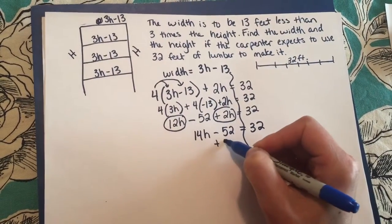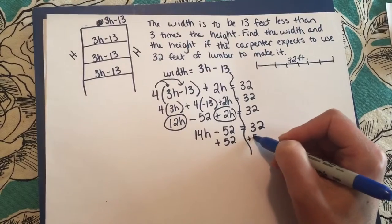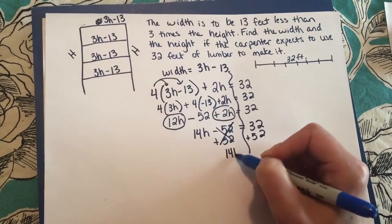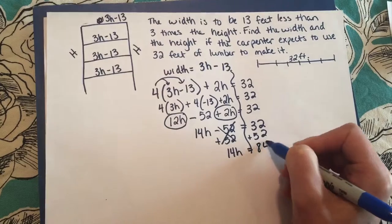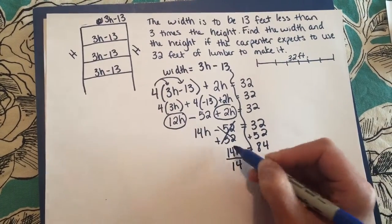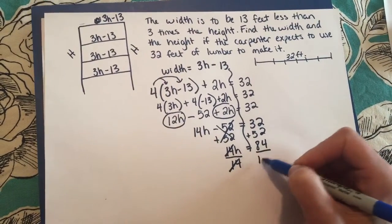I'm going to add 52 to both sides to get rid of that and I get 14h equals 84. Divide by 14 to get the h by itself.